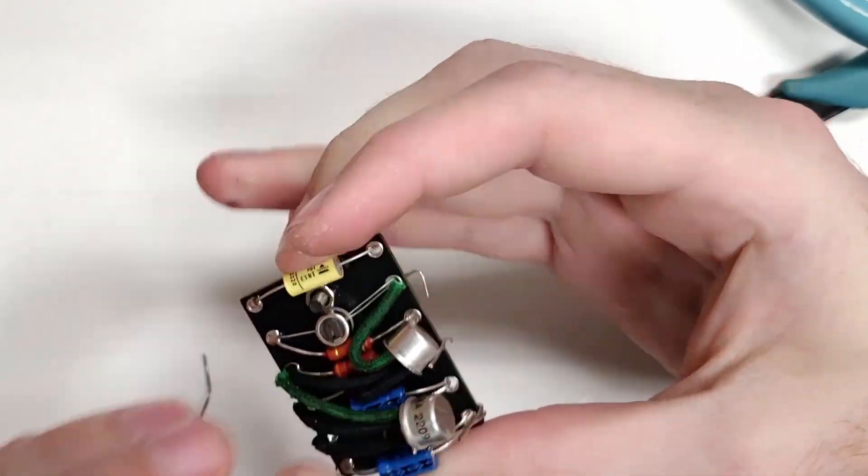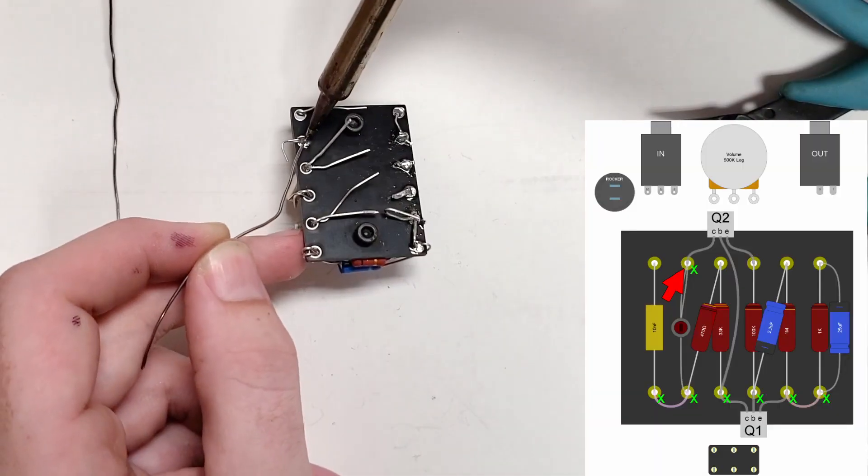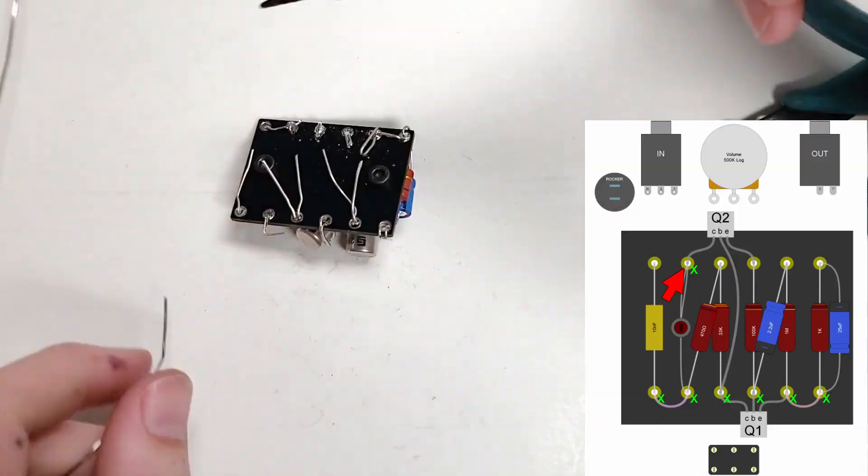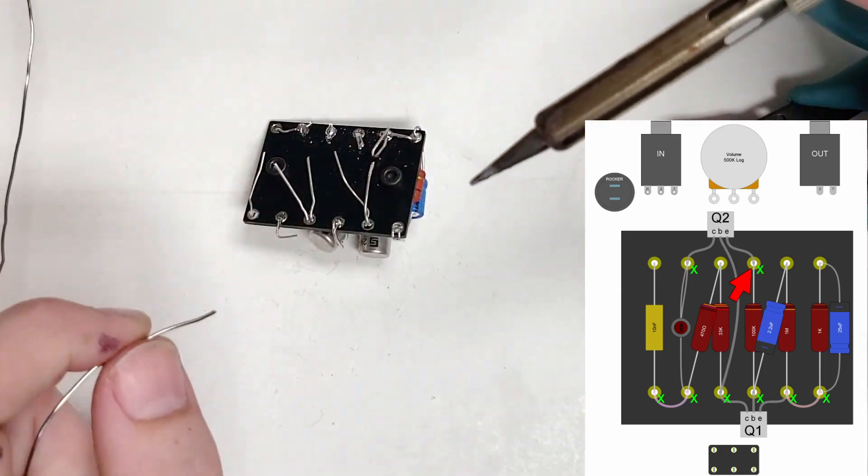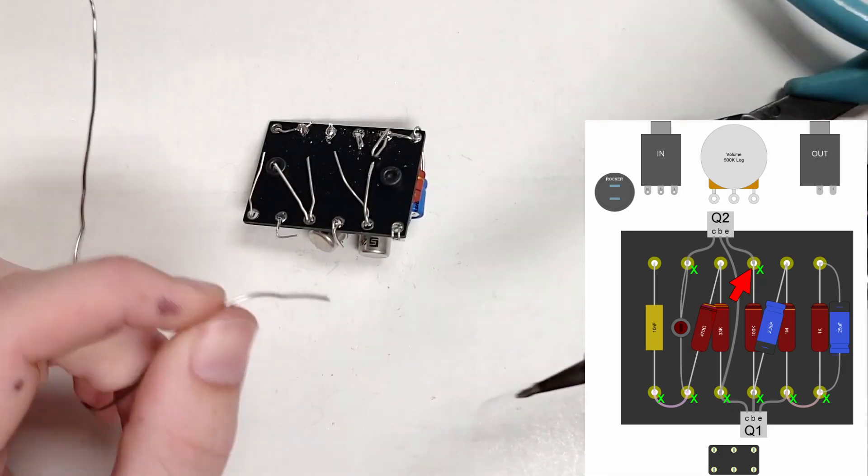With Q1 soldered insecurely, we'll bend it flat onto the board as well to keep the build compact. There are three eyelets on the top of the board that are now ready to be soldered permanently. Like we did on the bottom, we're going to bend the excess leads into place to make the onboard connections.